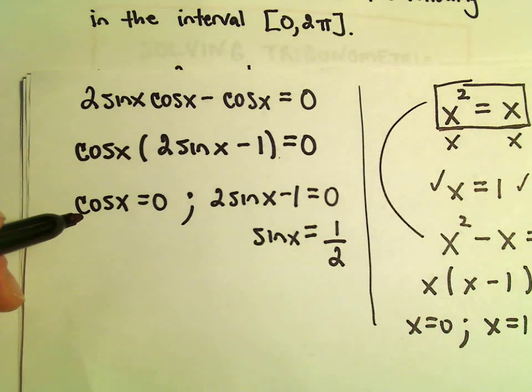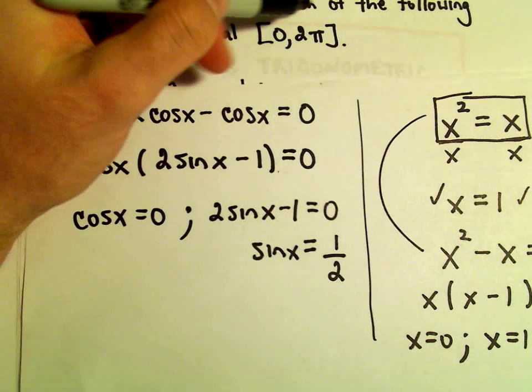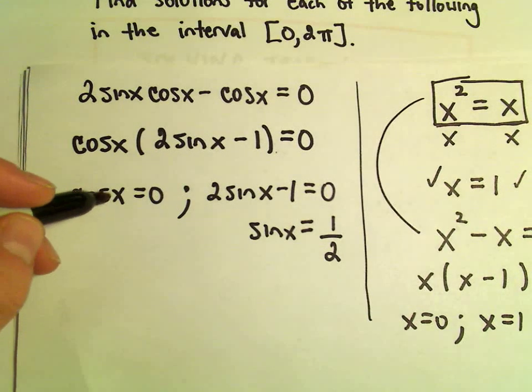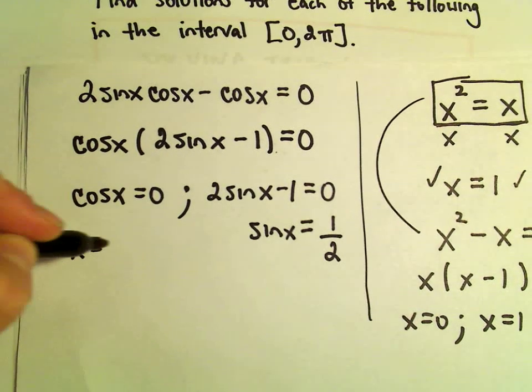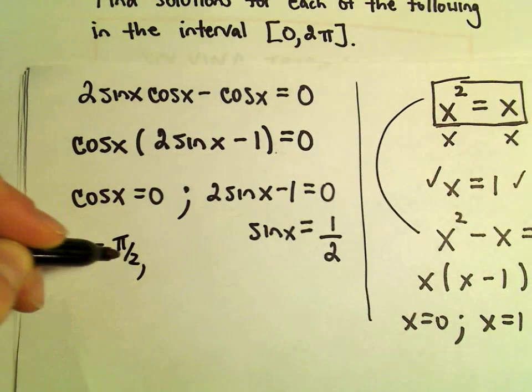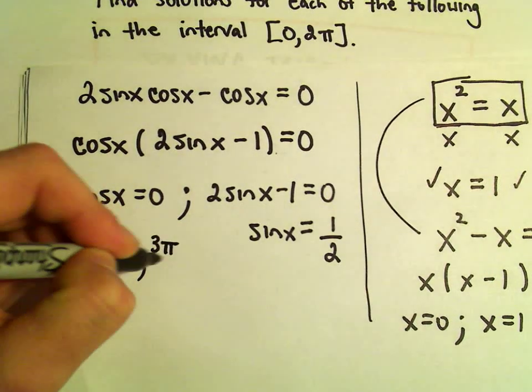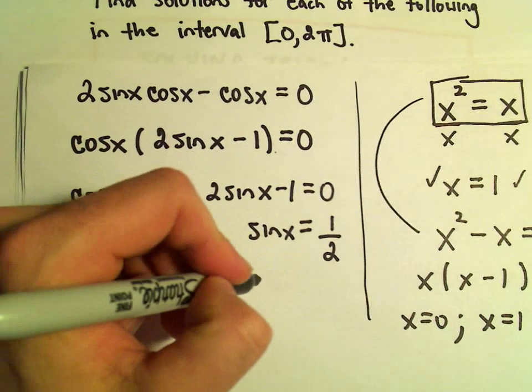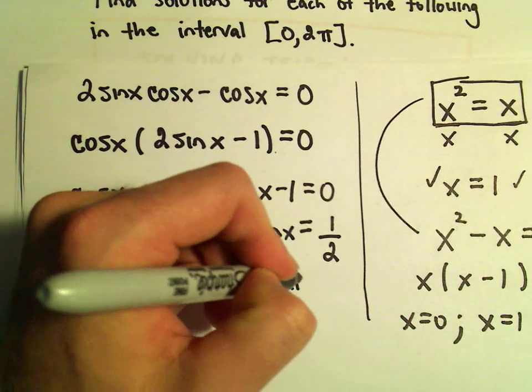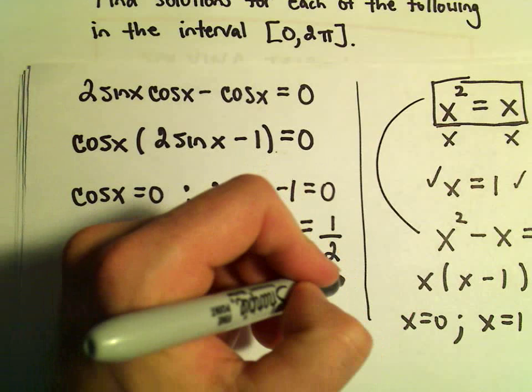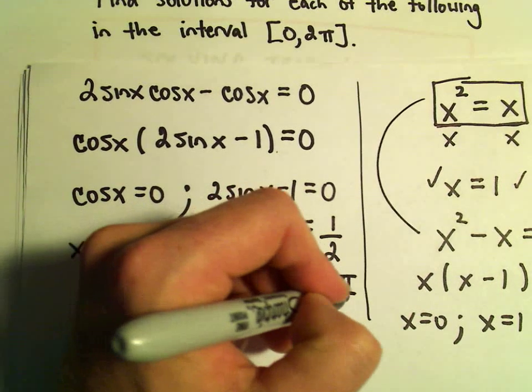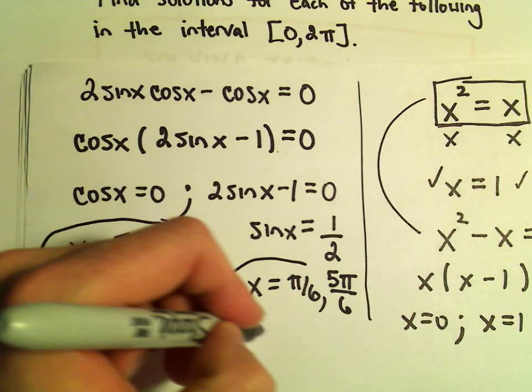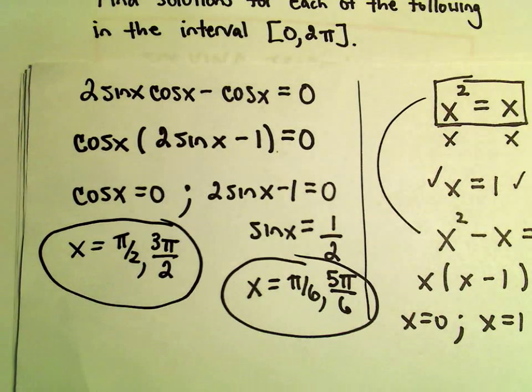We're finding solutions from 0 to 2 pi. Cosine of x equals 0 when x equals pi over 2 and when x equals 3 pi over 2. Sine of x equals one half at the angle pi over 6 and also at the angle 5 pi over 6. These are all of our solutions in the interval from 0 to 2 pi.